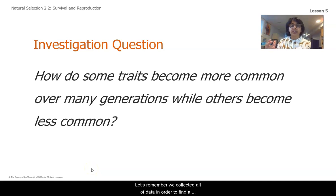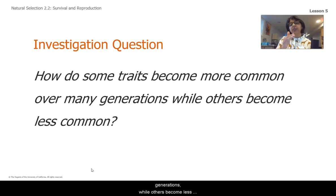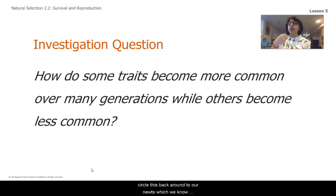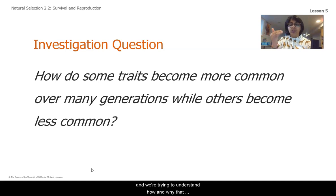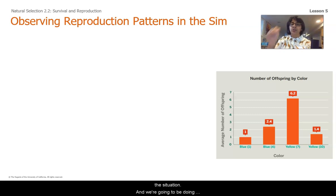Let's remember we collected all of this data in order to find a response to this investigation question: how do some traits become more common over many generations while others become less common? We're trying to circle this back around to our newts, which we know became more poisonous over time, and we're trying to understand how and why that happened. So let's take the data we just gathered with our Ostrilopes and apply it to this situation.